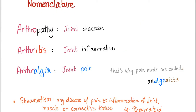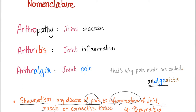Some nomenclature. Arthropathy is the pathology of the joint — joint disease, joint pathology. Arthritis means joint inflammation. Arthralgia means joint pain — that's why painkillers are called analgesics: 'an' in Greek means no, so 'no more algesia,' no more pain. Rheumatism is any disease with pain and inflammation of joint, muscle, or connective tissue. It's kind of an old name; nobody uses rheumatism anymore, but it's good to know.